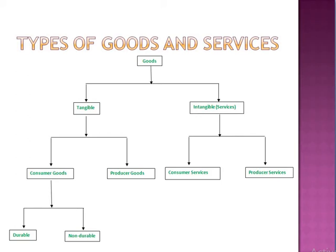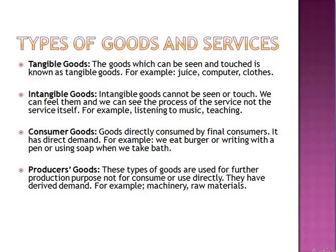Let's have some details on each of these categories. Tangible goods are goods which can be seen and touched — for example, juice, computer, clothes. Intangible goods cannot be seen or touched; we can feel them and we can see the process of the service, not the service itself — for example, listening to music or teaching.